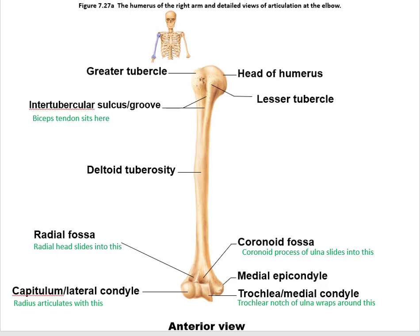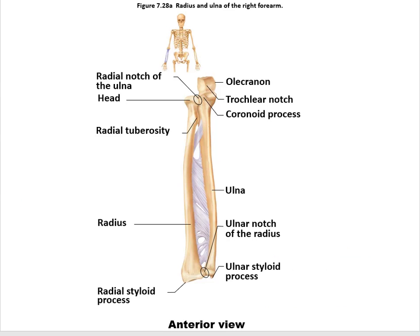Let's go into the bones of the forearm now — the antebrachium. There are two bones in the forearm. On the pinky side is the ulna, and on the thumb side is the radius. The ulna is the medial bone of the forearm and the radius is the lateral bone. This is described in anatomical position, so in anatomical position, the ulna is medial and the radius is lateral.